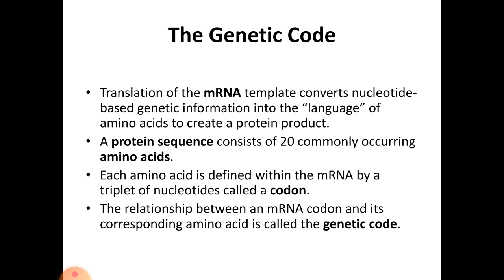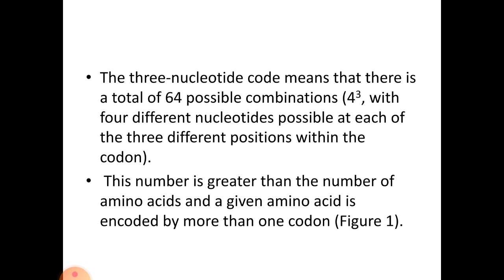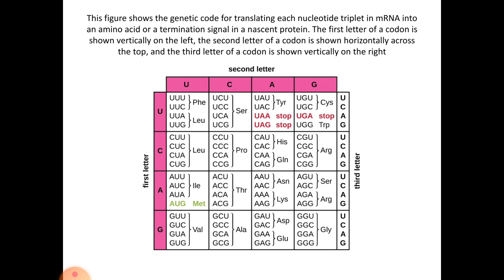The first aspect to understand in translation is the genetic code. Translation of the mRNA template converts nucleotide-based genetic information into the language of amino acids to create a protein product. A protein sequence consists of 20 commonly occurring amino acids. Each amino acid is defined within the mRNA by a triplet of nucleotides called a codon. The relationship between an mRNA codon and its corresponding amino acid is called the genetic code. The three-nucleotide codon means there is a total of 64 possible combinations — 4 to the power of 3 — with four different nucleotides possible at each of the three positions within the codon. This number is greater than the number of amino acids, so a given amino acid is encoded by more than one codon.